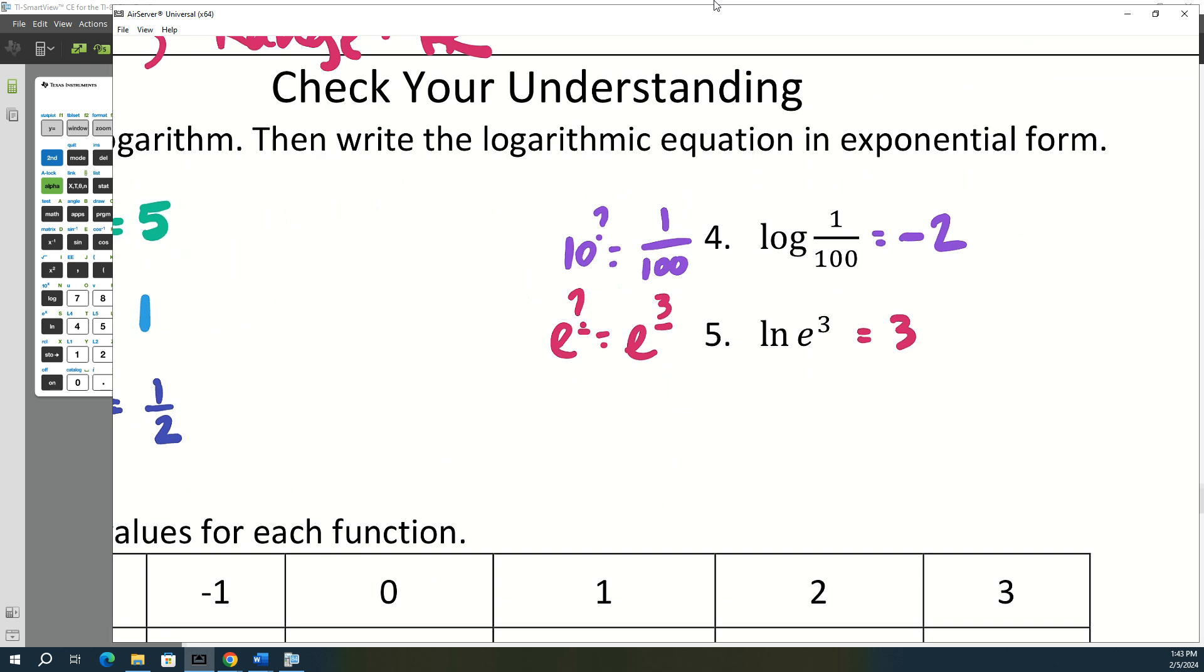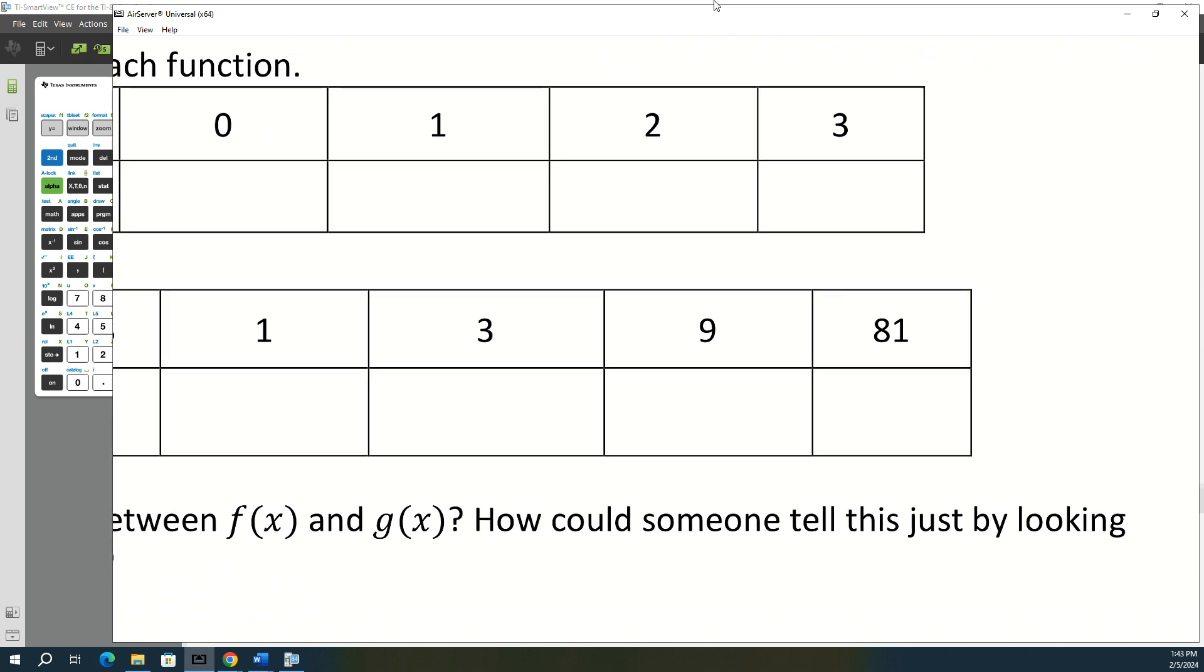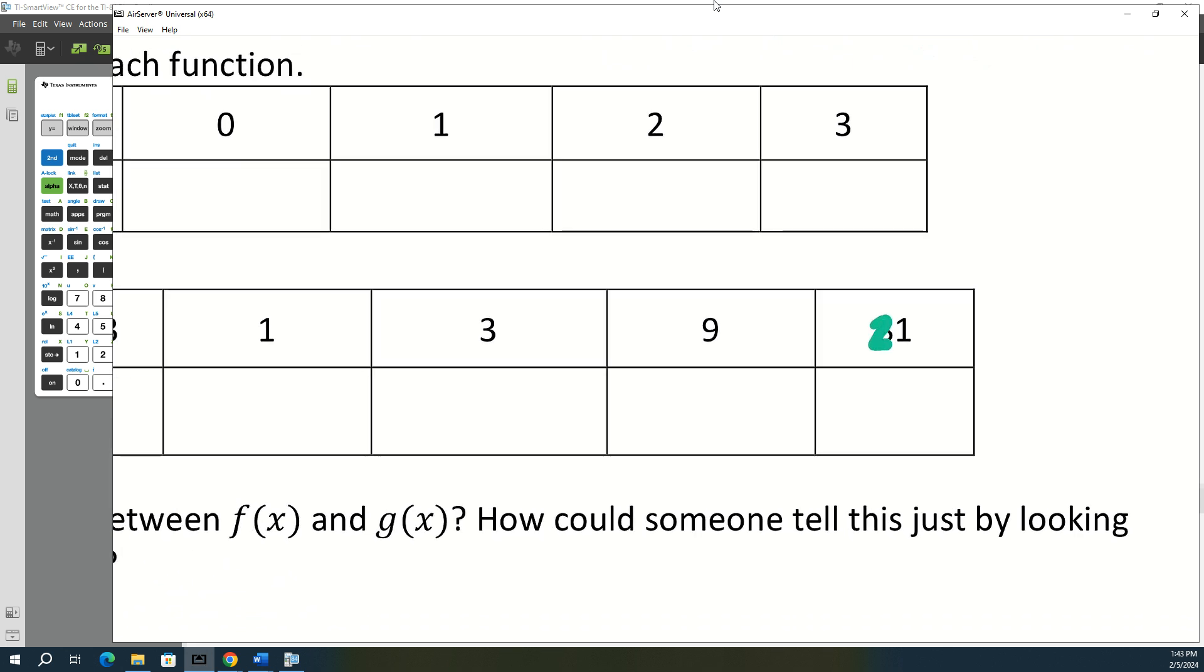Okay. Let's look at the next example with all the tables. If you'll do me a favor, on the second table, the g table, let's just change this 81 to 27, because it's going to make more sense if we do it that way.